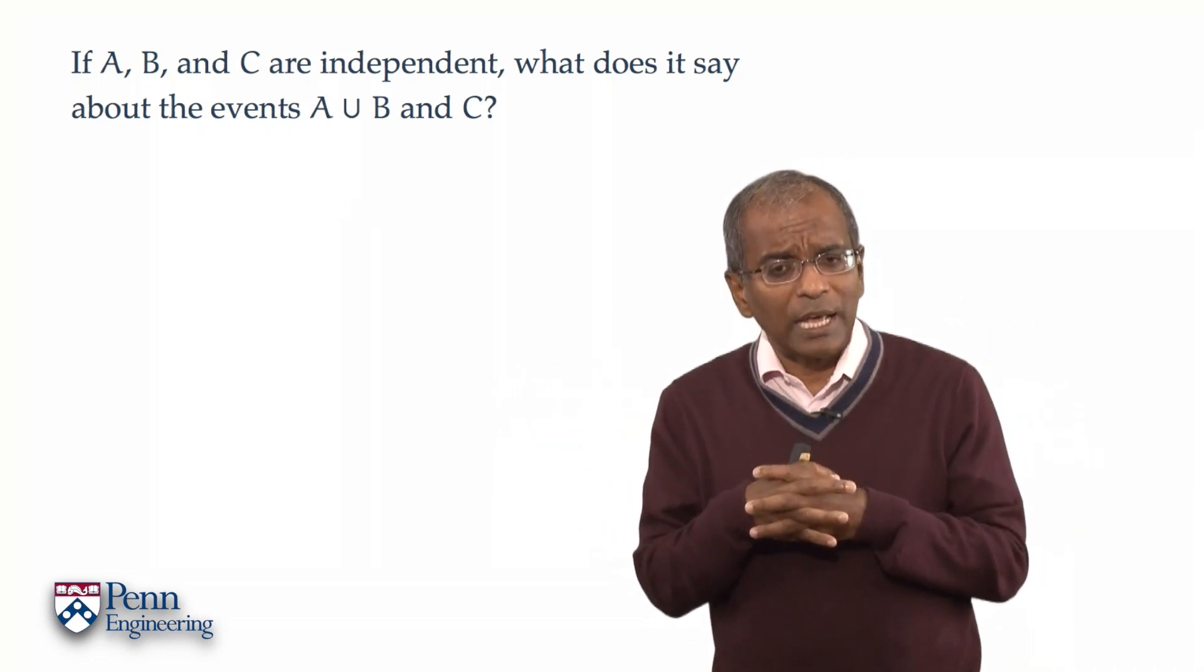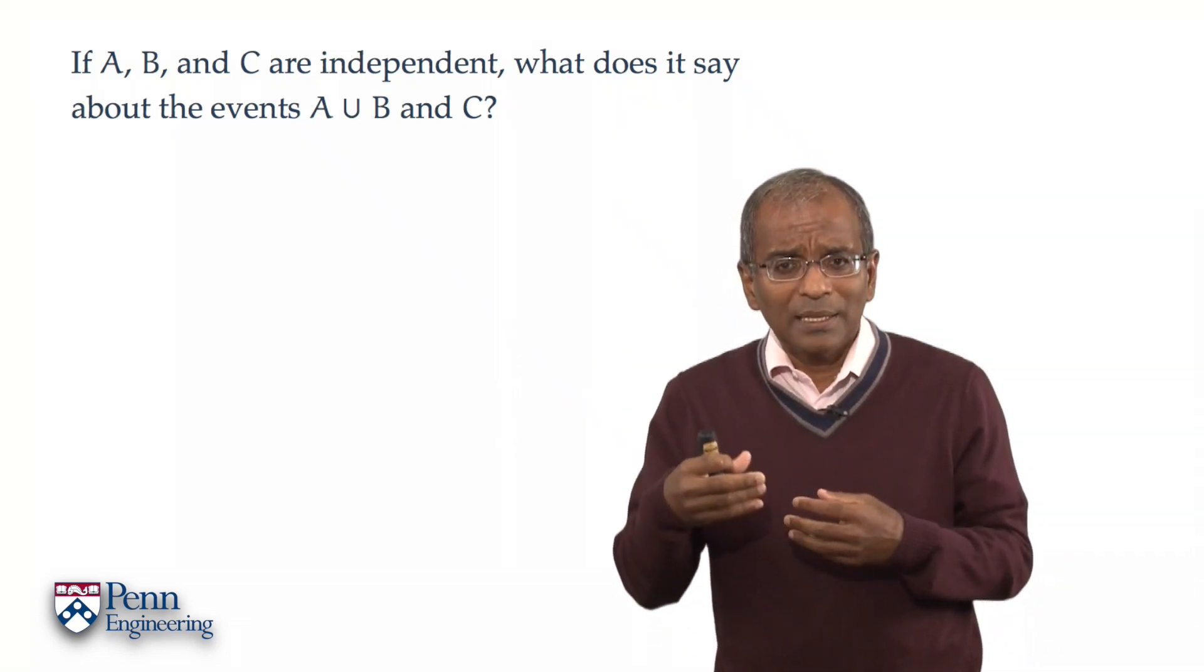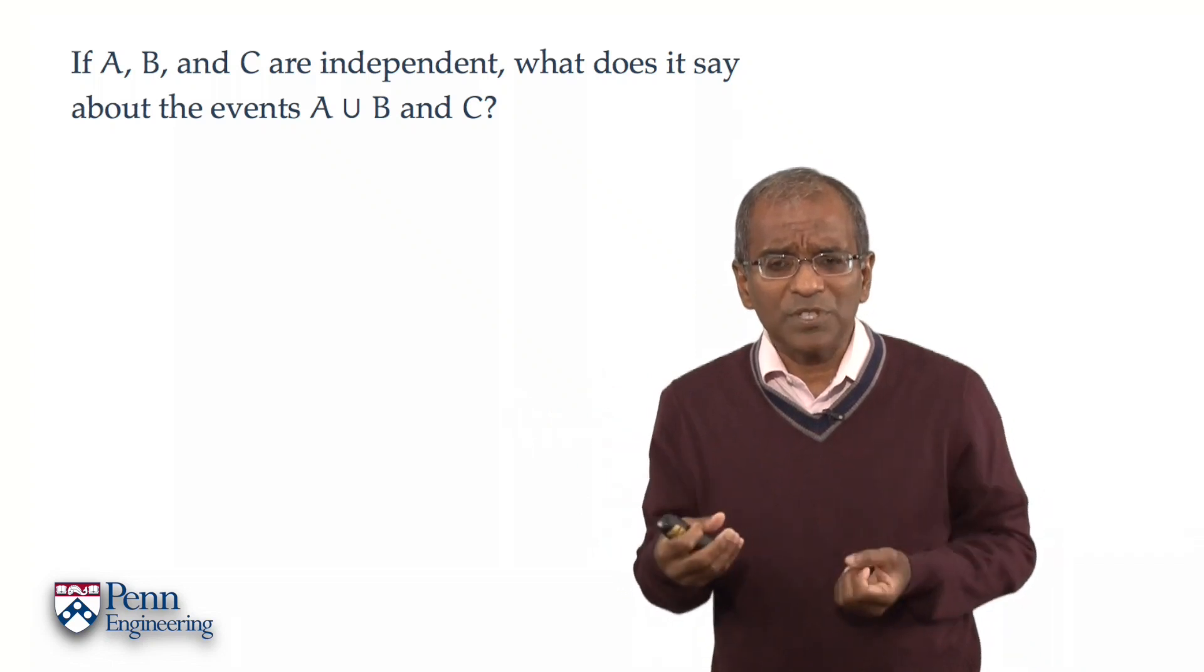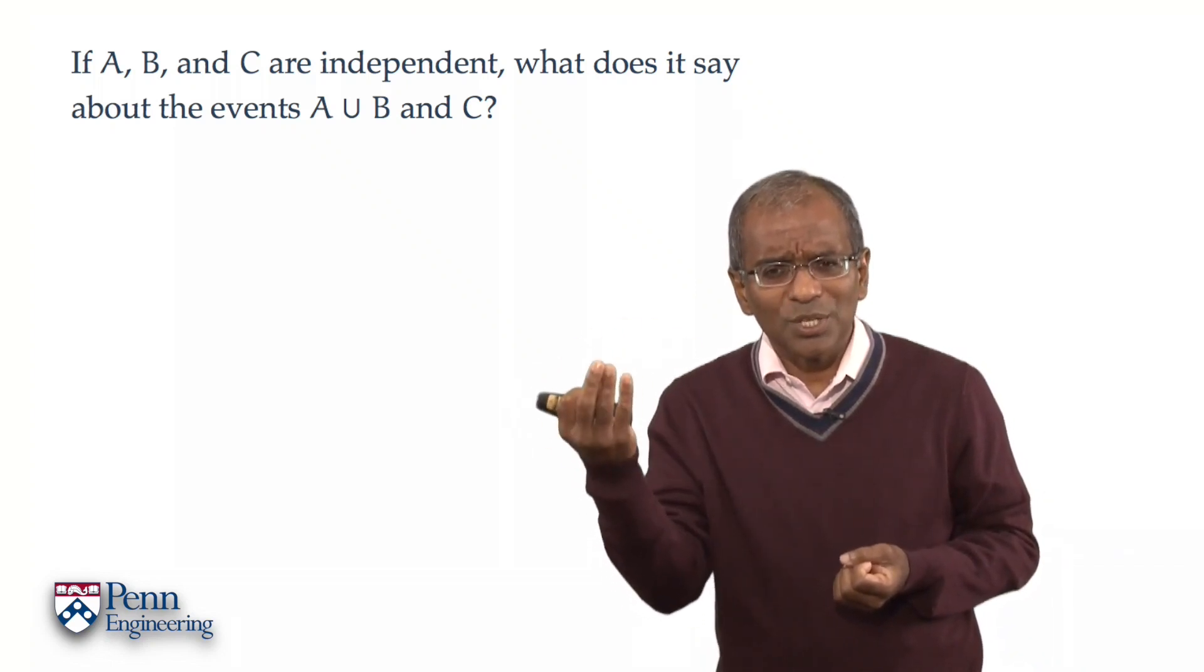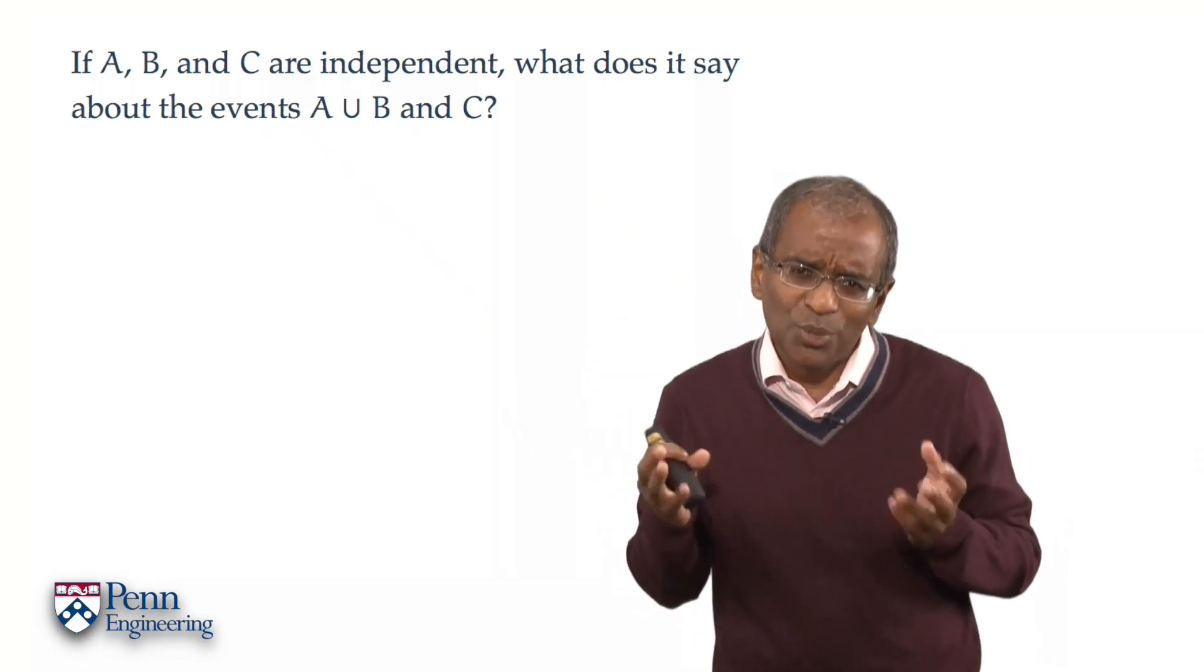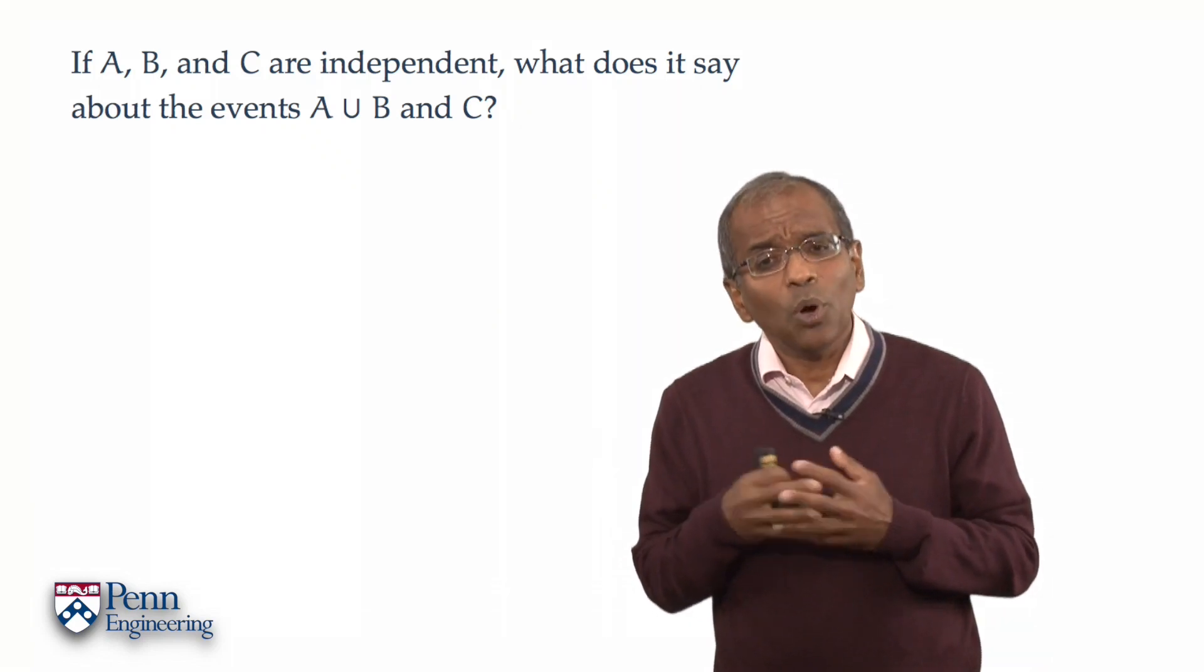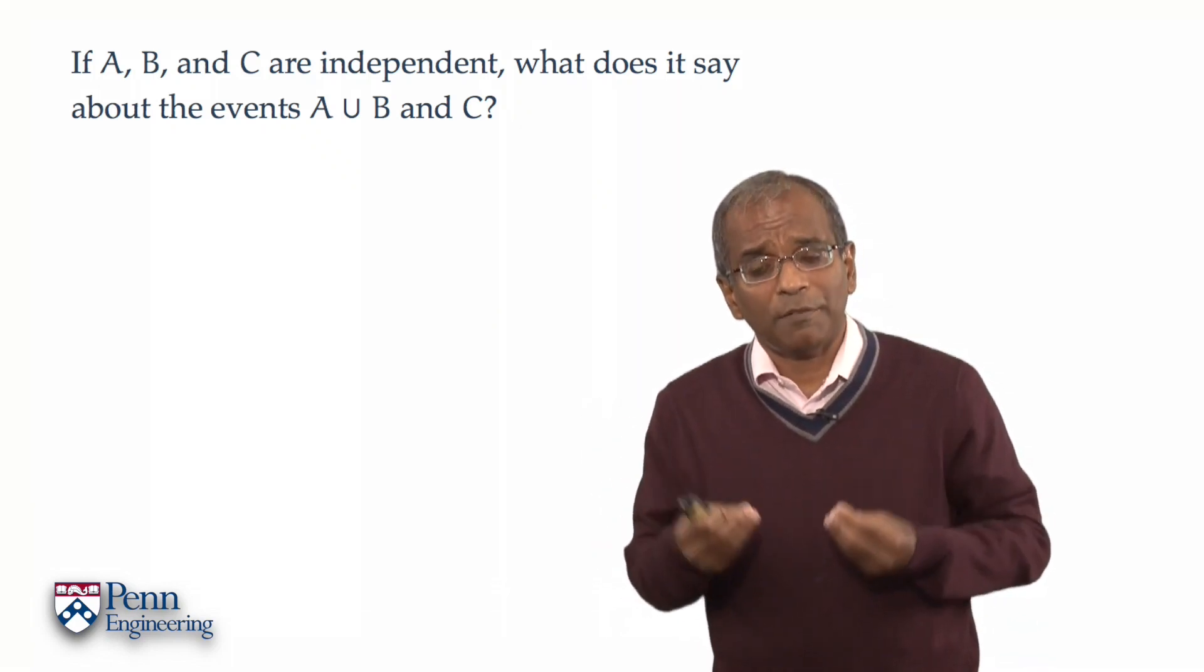Again, naturally enough, we anticipate that if A and B are independent of C, then A union B should also be independent of C, surely. Pause and see if we can verify this.